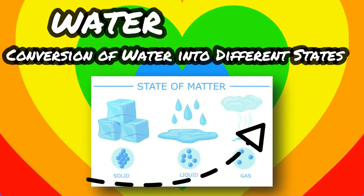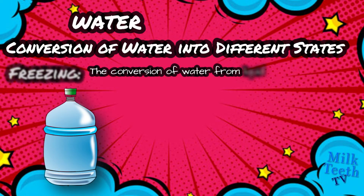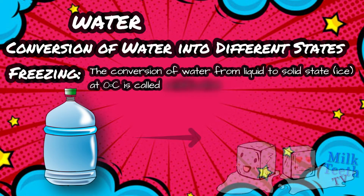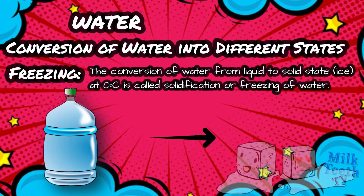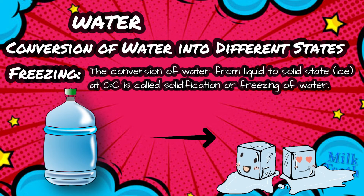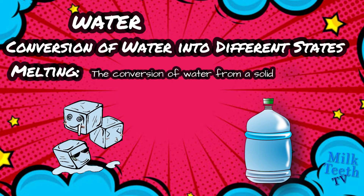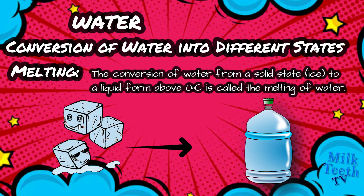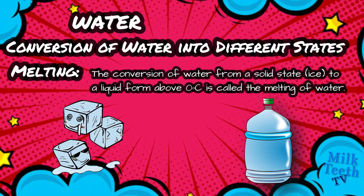Conversion of water in different states. The conversion of water from liquid to solid state, i.e. ice, at 0°C is called solidification or freezing. The conversion of water from solid state ice to liquid, occurring above 0°C, is called melting.